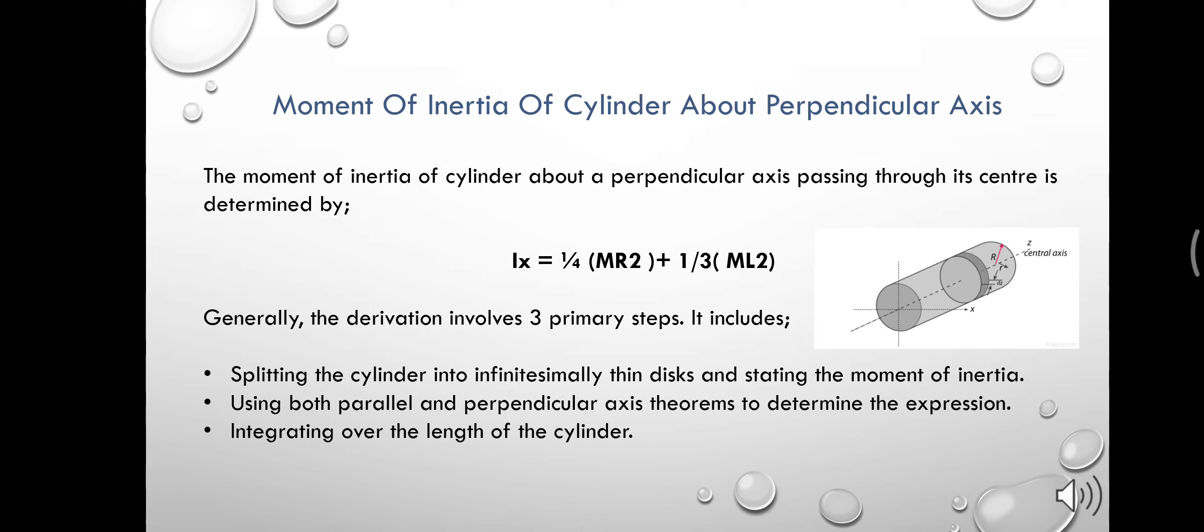A moment of inertia of a hollow cylinder about a perpendicular axis is given by the formula I equals to 1/4 M(R2 square) plus 1/3 M(L square), where R equals to radius and L equals to length.